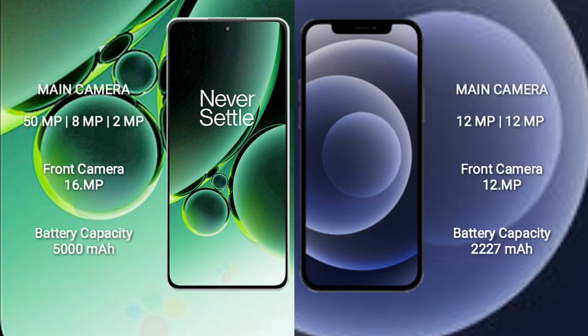OnePlus Nord 3 features a triple rear camera setup: 50MP plus 8MP plus 2MP, and a 16MP front camera. iPhone 12 mini features a dual rear camera setup: 12MP plus 12MP, and a 12MP front camera. OnePlus Nord 3 has a 5000mAh battery with 80W fast charging support. iPhone 12 mini has a 2227mAh battery with 20W fast charging support.